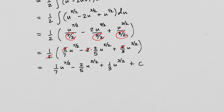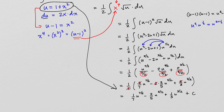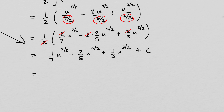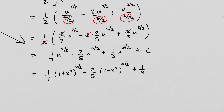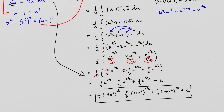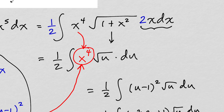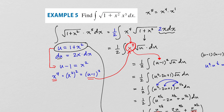Since u equals 1 plus x squared, substituting back gives: 1 seventh times 1 plus x squared to the 7 halves minus 2 fifths times 1 plus x squared to the 5 halves plus 1 third times 1 plus x squared to the 3 halves plus c. The key lesson here: when you make your substitution and still have x terms left over, you must express those x terms in u as well — you cannot have mixed variables in an integration problem.